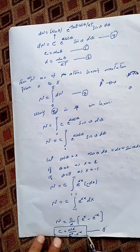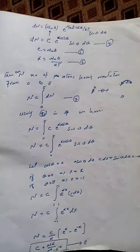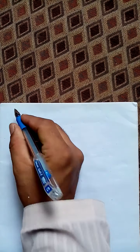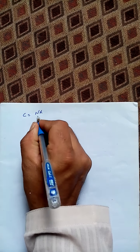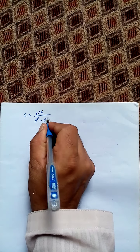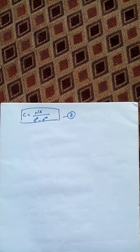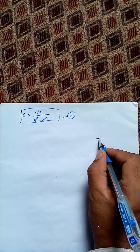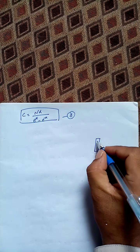This was the last equation we derived in the previous video. C is equal to N·α over e raised to the power α minus e raised to the power minus α. We call it equation number 8.